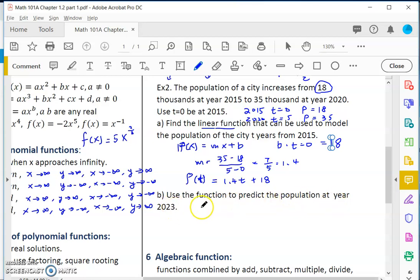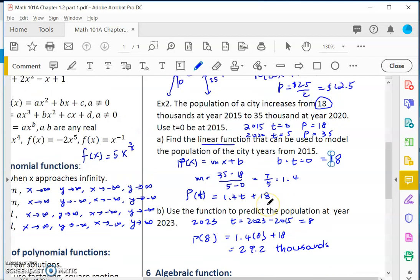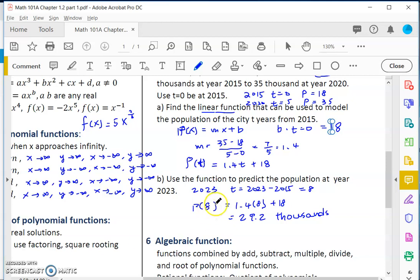Use the function to predict the population at year 2023. At 2023, t would be 2023 minus 2015, which equals 8. So the population at year 2023 would be p of 8, which equals 1.4 times 8 plus 18. That is 29.2. The units are thousands. That is how you use linear and quadratic models to model applications.